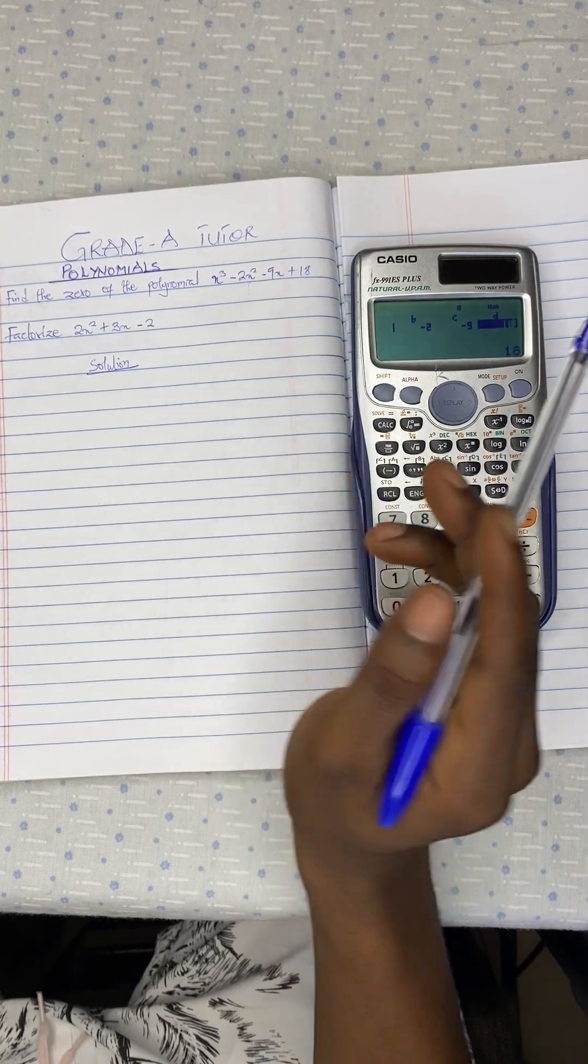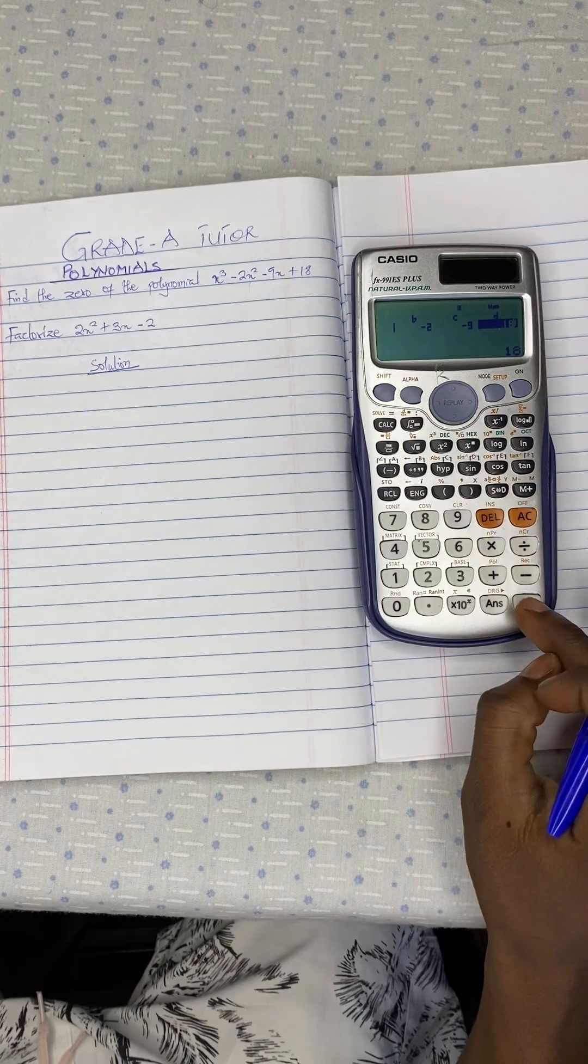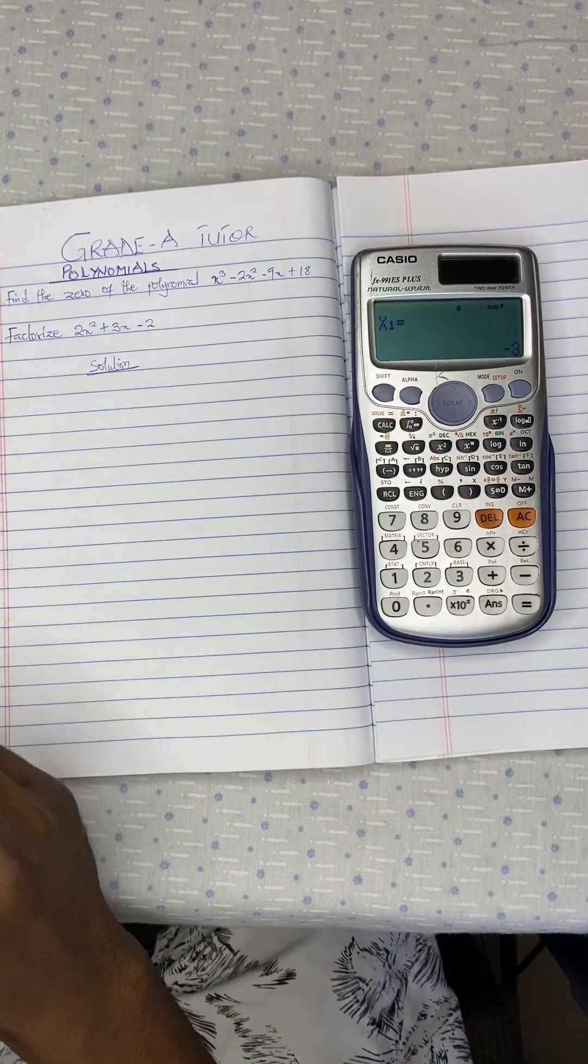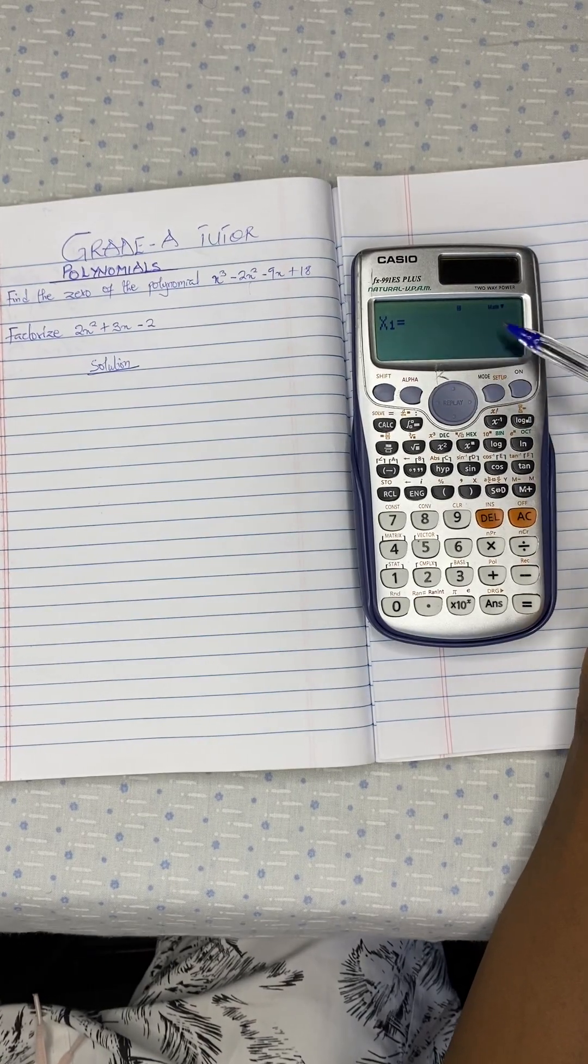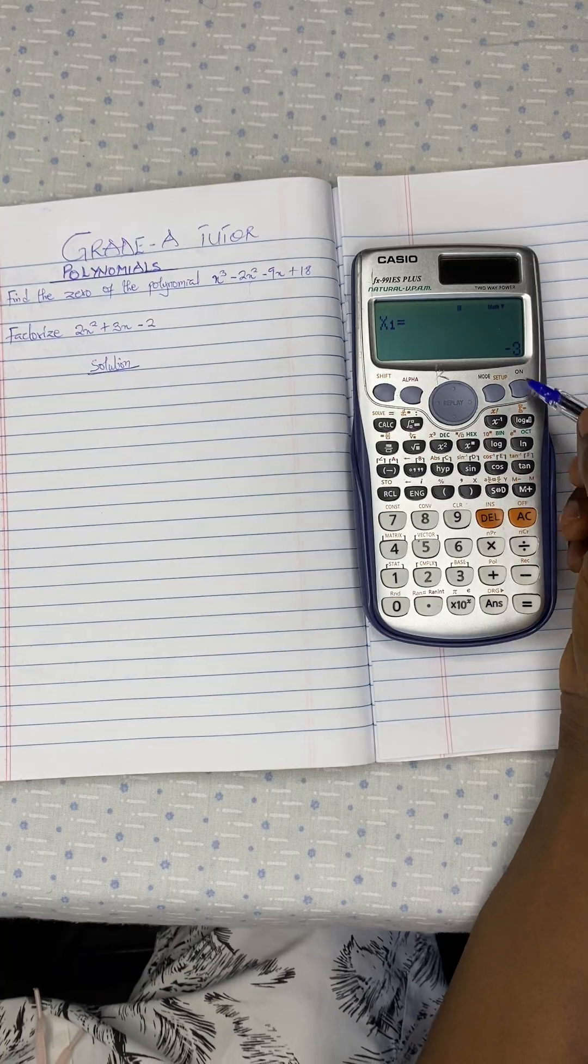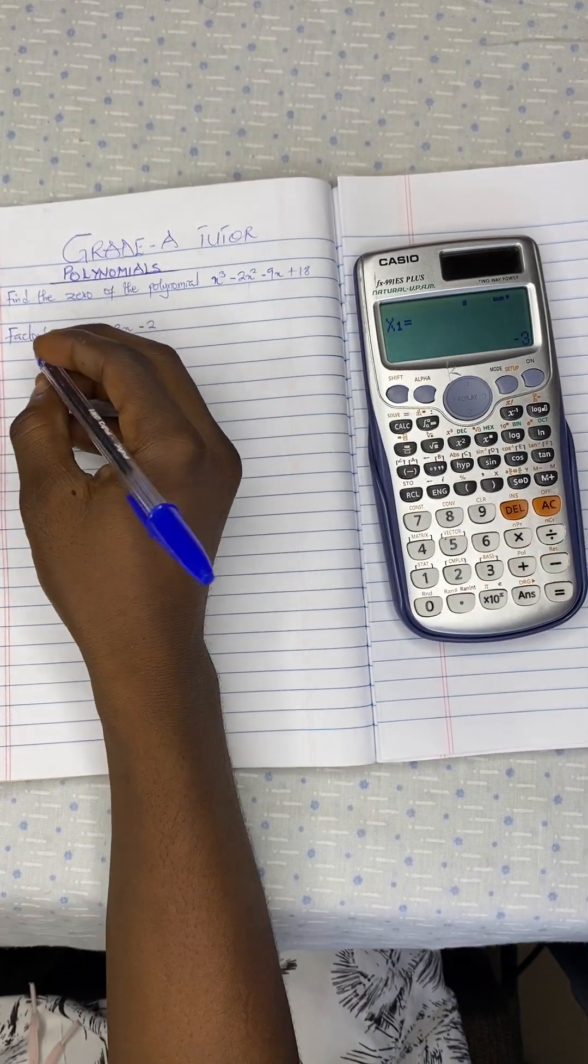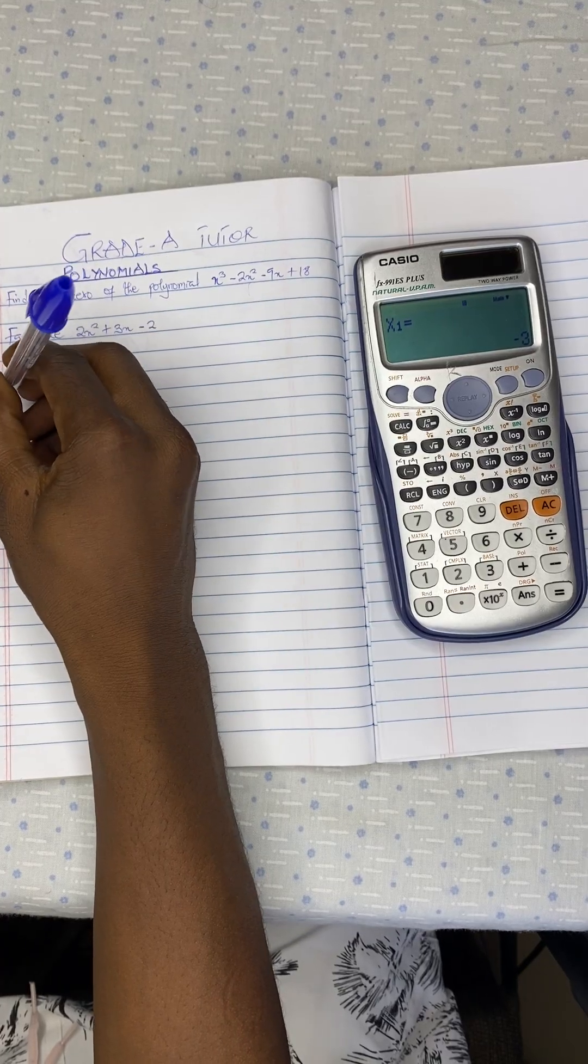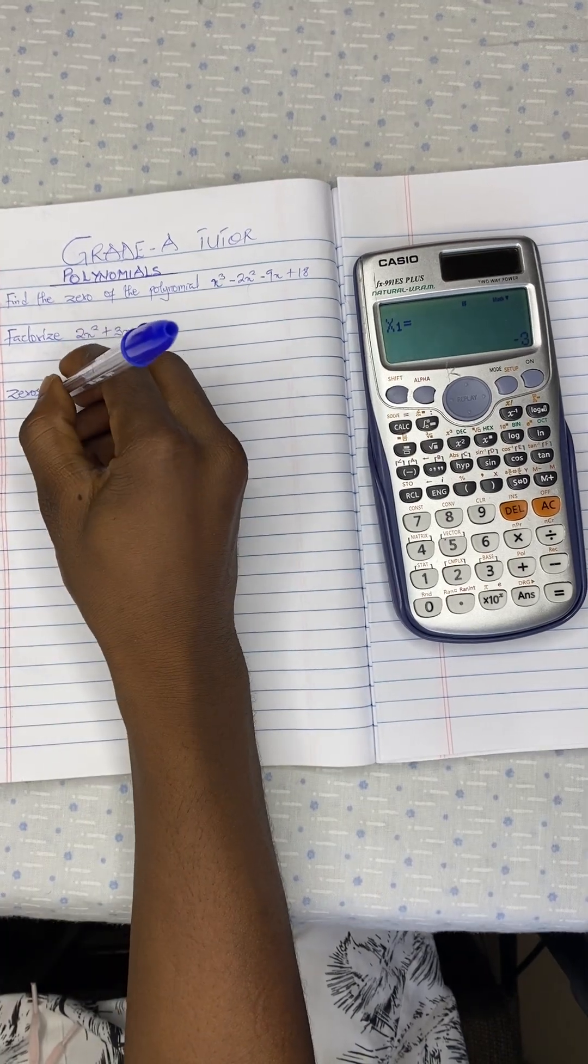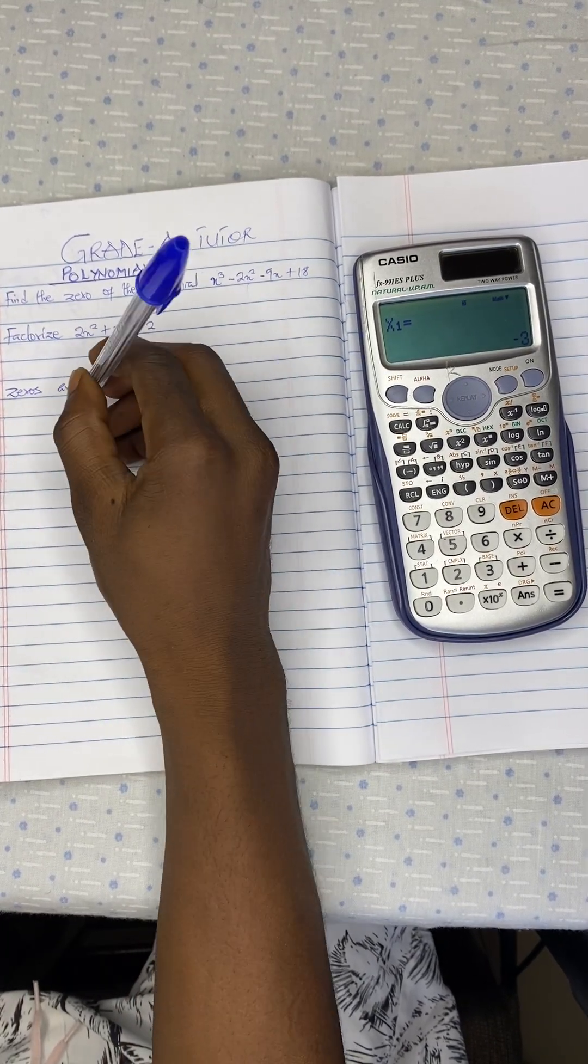Now we are done inputting all the coefficients of the variables here. So now we press on equal to and wait for our answer. For question 1, we have x1, the first root or the first zero to be negative 3.